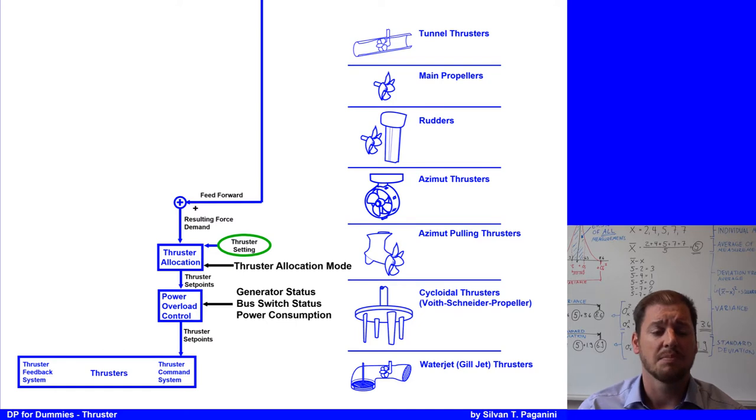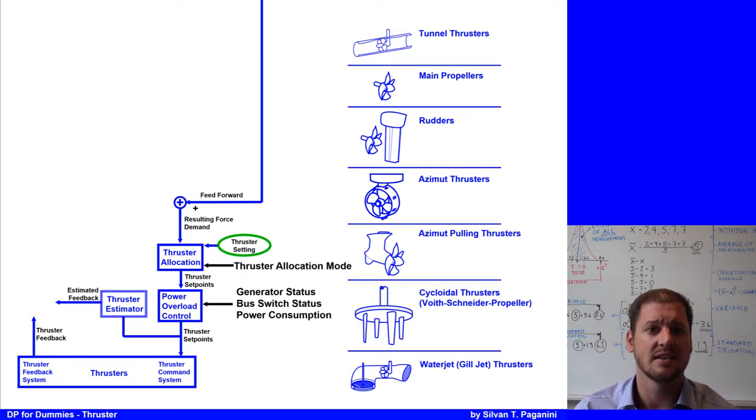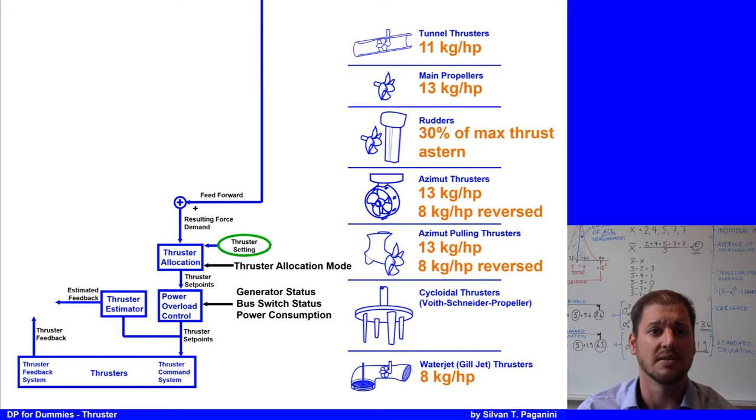The thruster set point from the overload control also finds its way into the thruster estimator. There, the estimated thruster feedback is calculated using an available accurate thruster prediction for each type of thruster. Normally, the thruster manufacturer provides an open-water bollard characteristic graph with all information needed. For each thruster, what you can expect, we have here some examples. Like a tunnel thruster, we can expect 11 kg per horsepower, or an azimuth thruster, we can expect 13 kg per horsepower. But the thruster estimator main task is to calculate the estimated feedback from the thrusters.